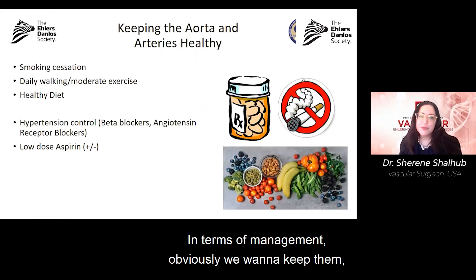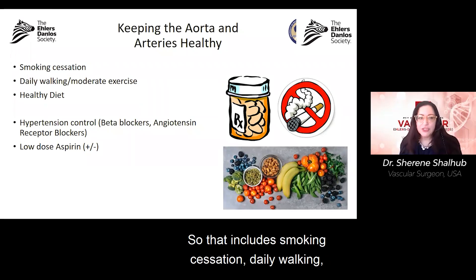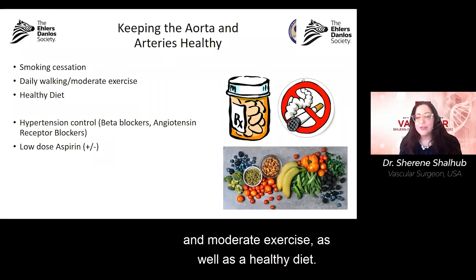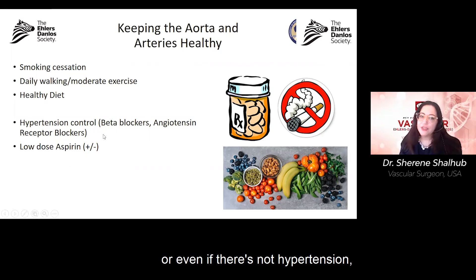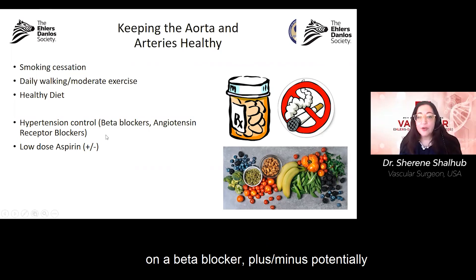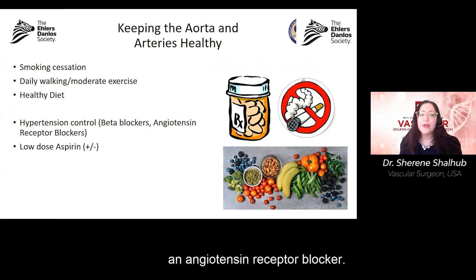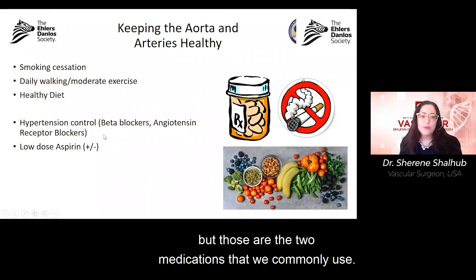In terms of management, we want to keep the aorta and arteries healthy. That includes smoking cessation, daily walking, moderate exercise, and a healthy diet. If there's hypertension — or even if there isn't — we tend to lean toward starting patients on a beta blocker, plus or minus an angiotensin receptor blocker. There are variations in practice, but those are the two medications we commonly use.